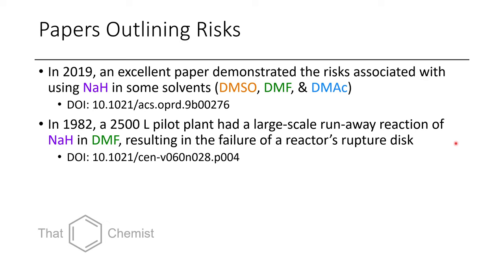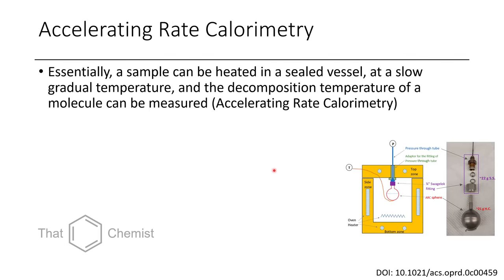There could be massive consequences — someone may have been killed, injured, or potentially fired as a result, because hazards like this are a big deal, and industry hates dangerous chemistry. One way to assess risk is calorimetry, specifically accelerating rate calorimetry. You slowly heat up a sample in a sealed bomb flask and measure the pressure and temperature compared to the external temperature of the oven.